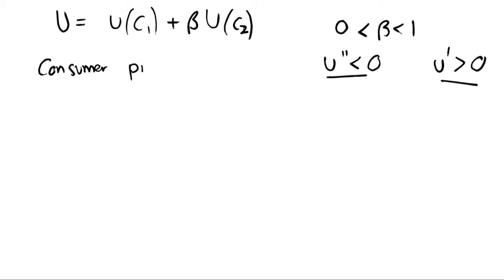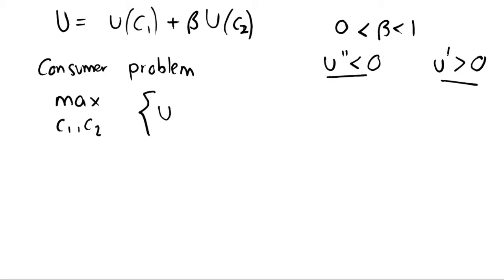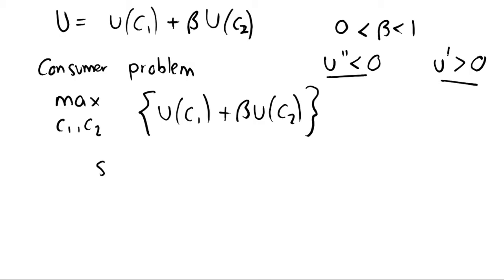The consumer problem is where we maximize the utility of the consumer subject to their budget constraint. We maximize over c1 and c2 — we're maximizing this utility equation subject to the budget constraint, which we derived in a previous video. This is the intertemporal budget constraint: the present value of consumption has to equal the present value of income.